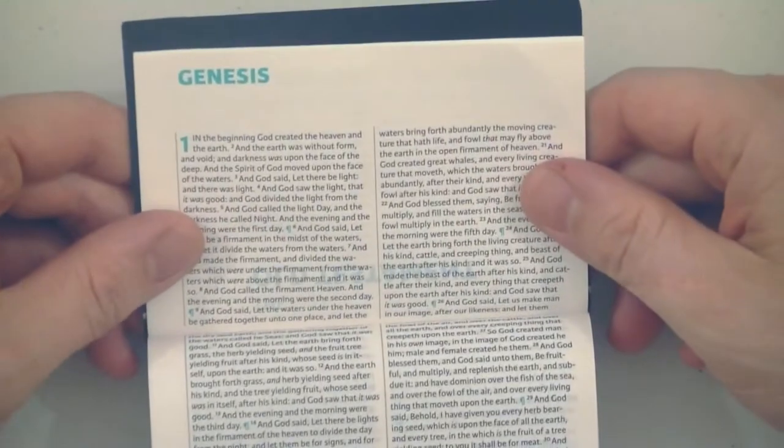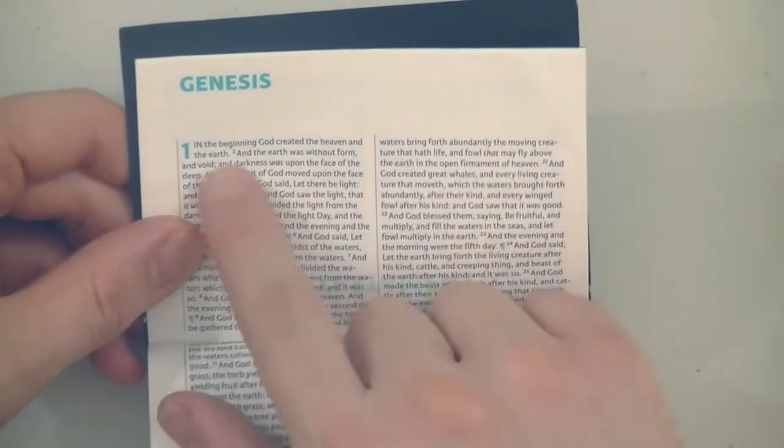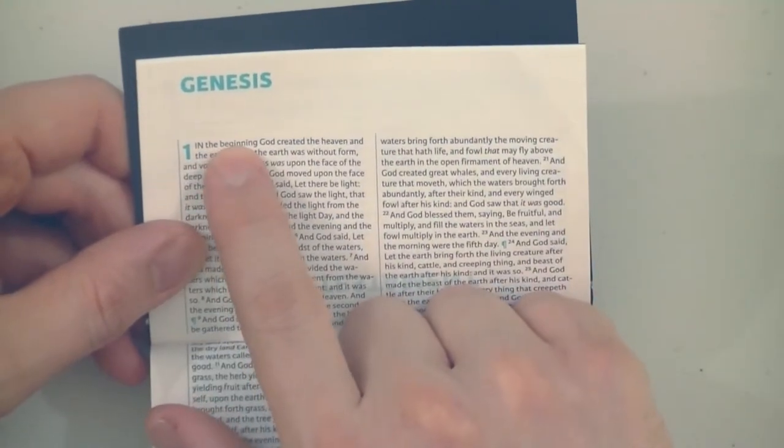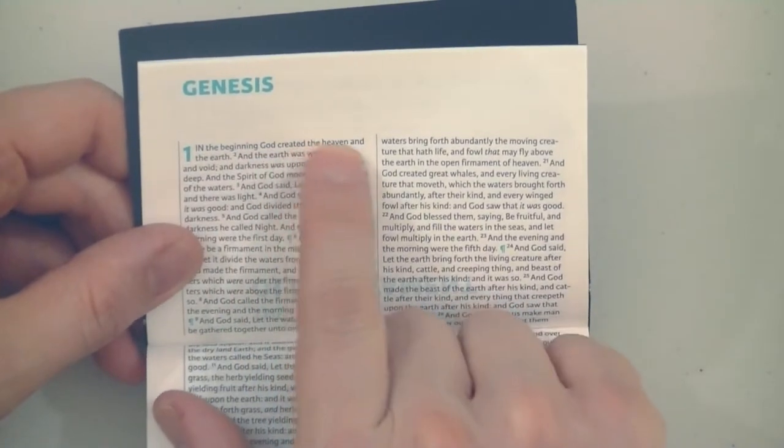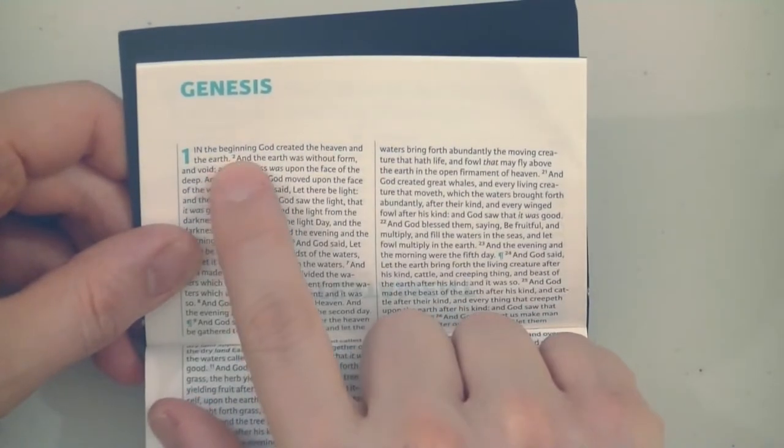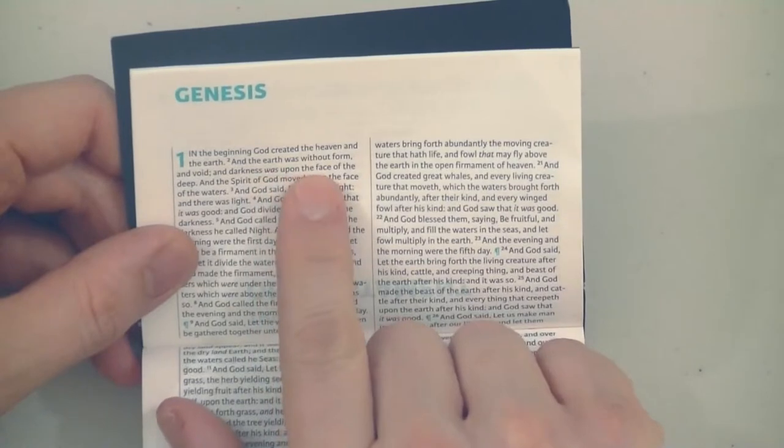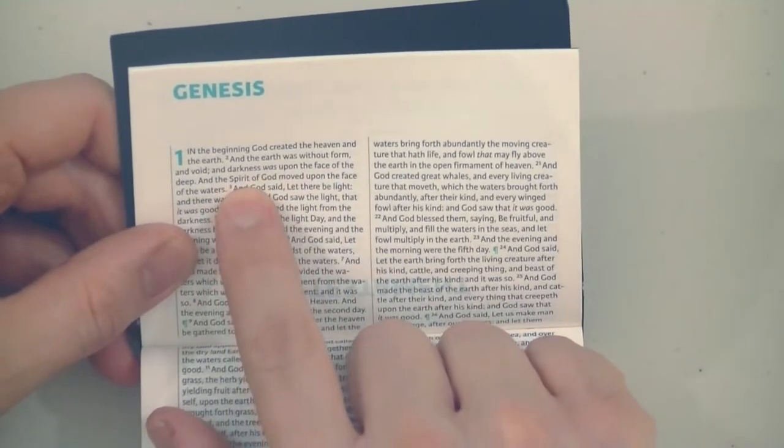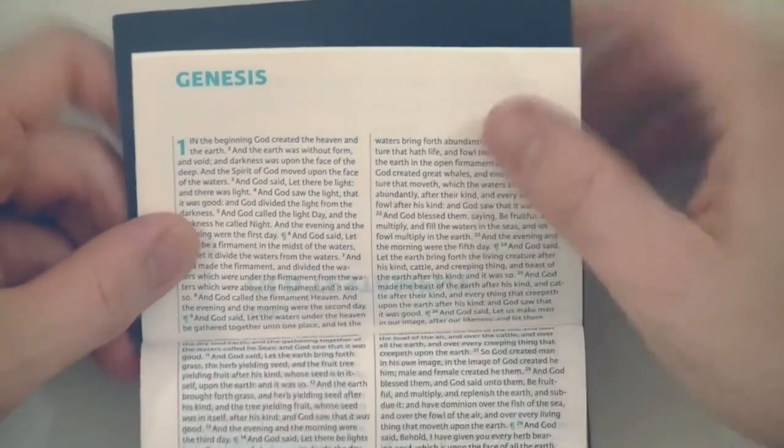Genesis, chapter 1. And it is the right text so far from what I've seen. In the beginning God created the heaven and the earth. And it says down here the Spirit, capital S. So it's pretty good.